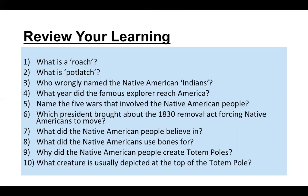Name the five wars that involved the Native American people — look back in the video to find them. Which president signed the 1830 Removal Act forcing Native Americans to move? President Jackson. What did the Native American people believe in? They believed in lots of different gods and they believed in the sun god. What did the Native Americans use bones for? They used them as weapons. Why did the Native American people create totem poles? That was so they could commemorate and remember events or people that had happened in the past. What creature is usually depicted at the top of the totem pole? It has a beak and very large wings — it was an eagle.